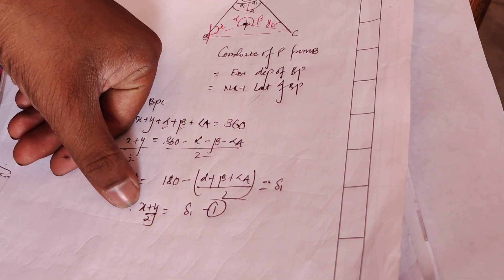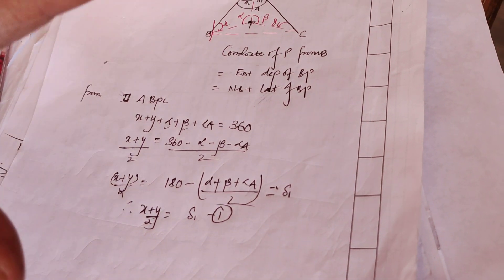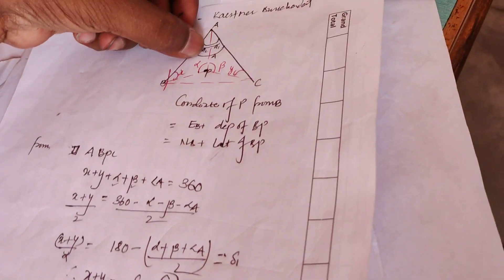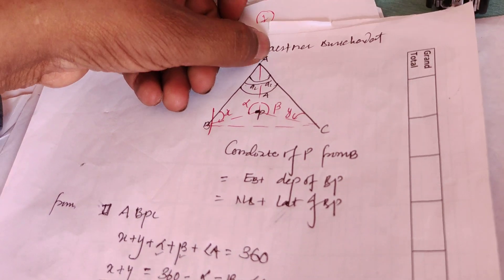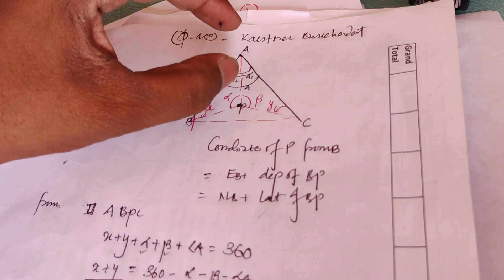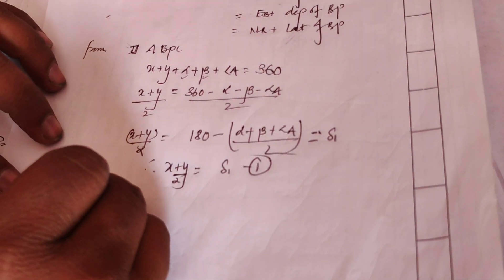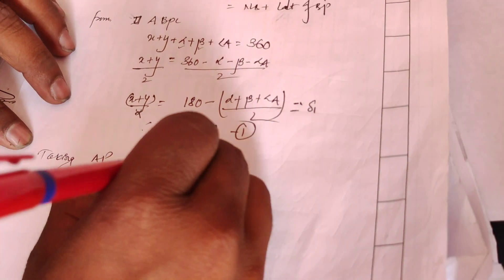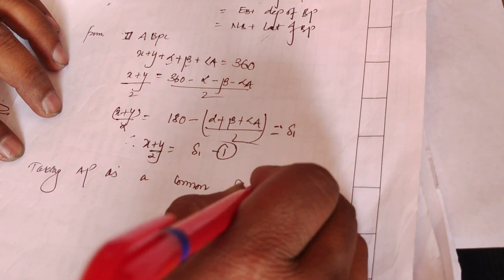Now let's take this term — it's called 5 minus 45. Let's try triangles ABP and APC. The common point is A and P. AP is a common point — this is very important.